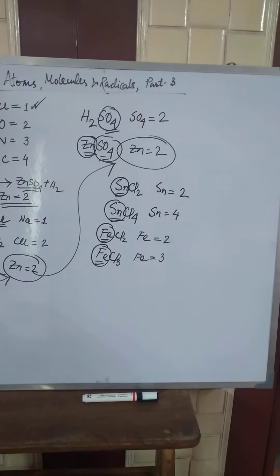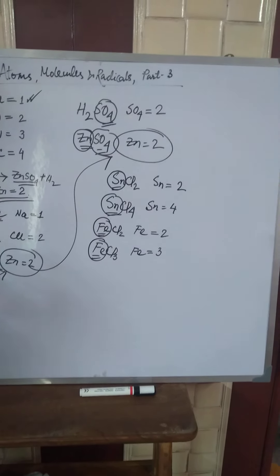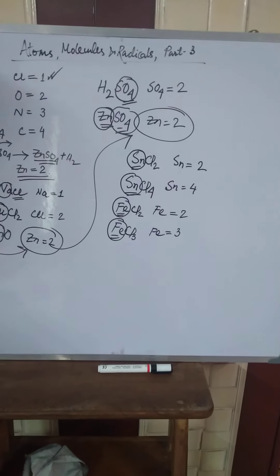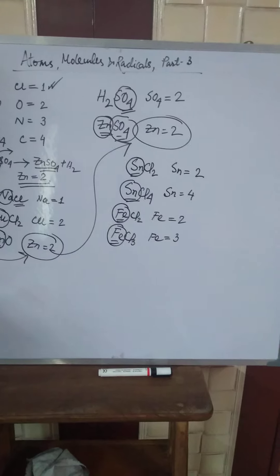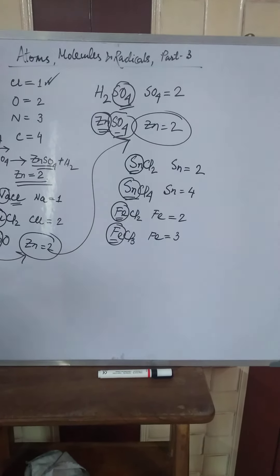I am giving you another example — some elements whose valency is zero. That means helium, neon, argon, krypton, xenon, radon. These exhibit zero valency because they are chemically inert.